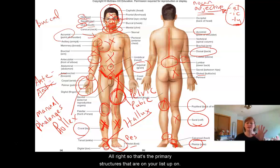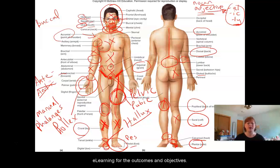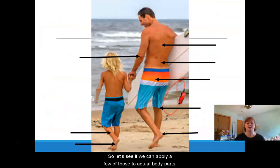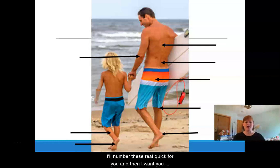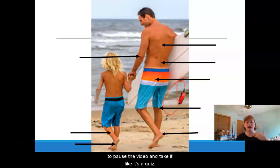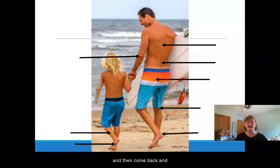Alright, so those are the primary structures on your list for the outcomes and objectives. So let's see if we can apply a few of those to actual body parts. What I would suggest you do is just pause the video — I'll number these real quick for you — and take it like a quiz. See if you can name them, see how close you can get, and then come back and see how you did.